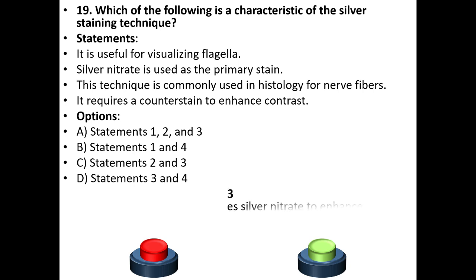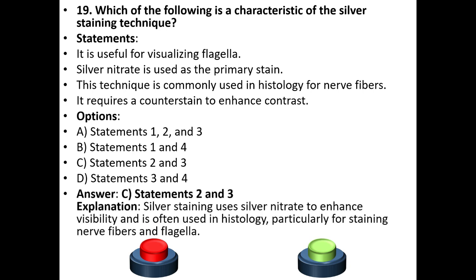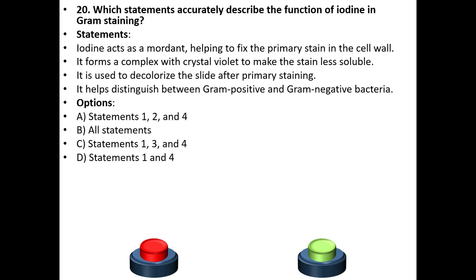The correct answer is C: statements 2 and 3. Explanation: Silver staining uses silver nitrate to enhance visibility and is often used in histology, particularly for staining nerve fibers and flagella.